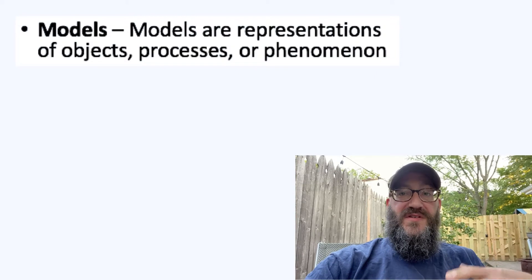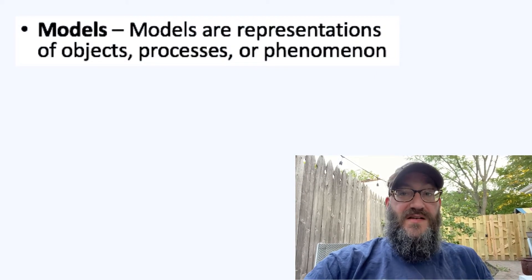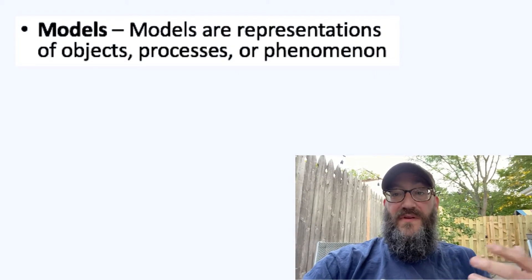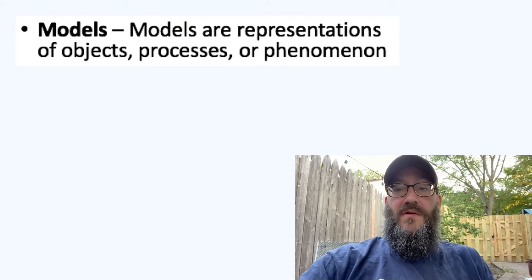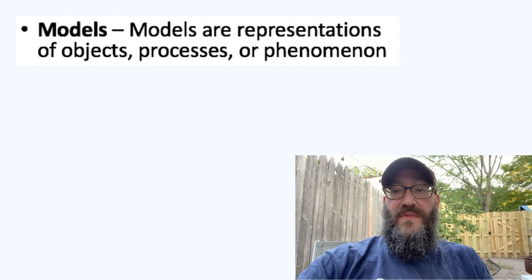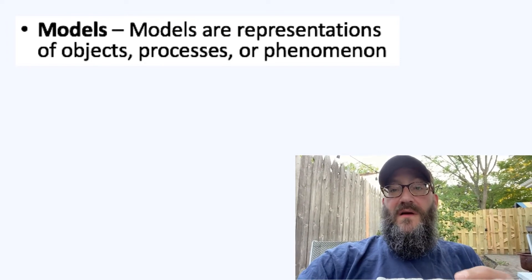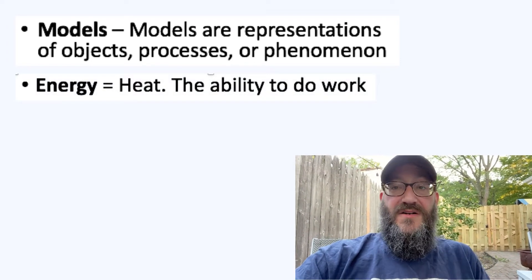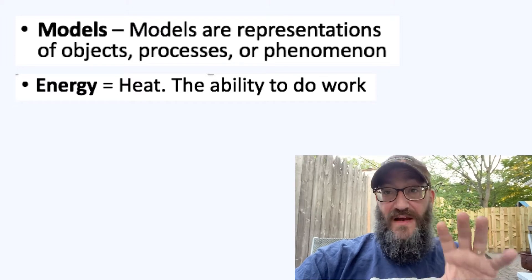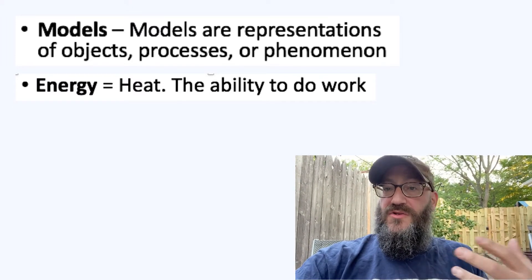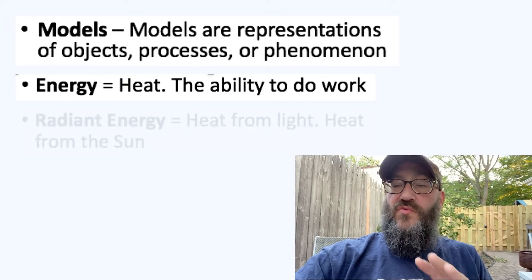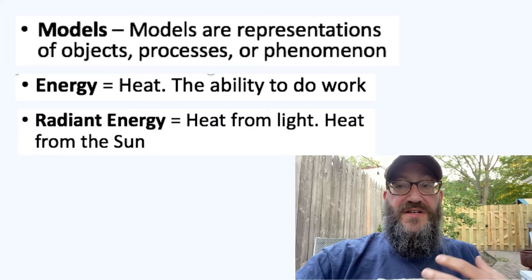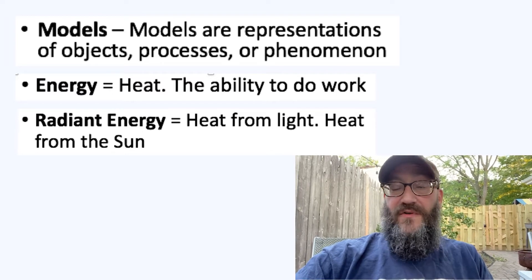We already talked about what models are — they're representations of objects, processes, or phenomena that happen. There are different kinds of models: a computer simulation is a model, a drawing is a model, you can make a physical model of something. I mentioned the word energy — energy is the ability to do work. It takes energy to move a table or a chair, but we can also use the word energy to talk about heat. Another energy term is radiant energy, which is energy from light, whether from a heat lamp or from the sun.